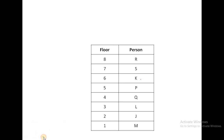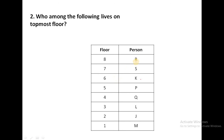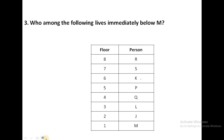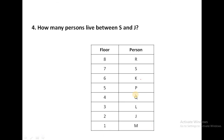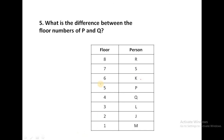Next question: Who among the following lives on the topmost floor? The topmost floor is R. Next: Who among the following lives immediately below M? M is on the top floor. Next question: How many persons live between S and J? J and J — there are 4 persons. Next question: What is the difference between the floor numbers of P and Q? P is on floor 5 and Q on floor 4, so 5 minus 4 equals 1. Your answer is 1.